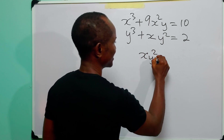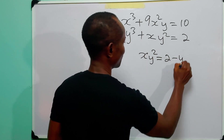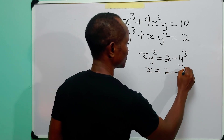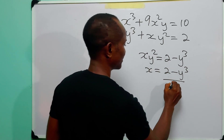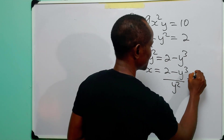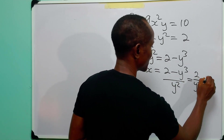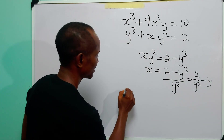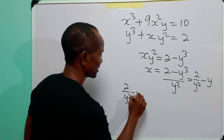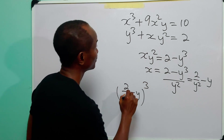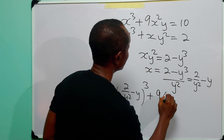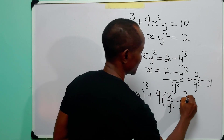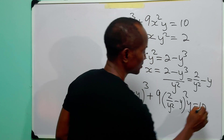So xy squared is equal to 2 minus y cubed, which means x is equal to (2 minus y cubed) divided by y squared. And of course this is equal to 2 over y squared minus y. Substituting into equation 1, you have that (2/y² - y)³ + 9(2/y² - y)²·y is equal to 10.